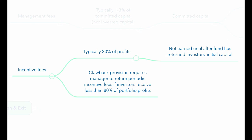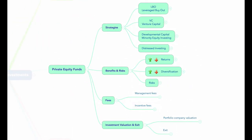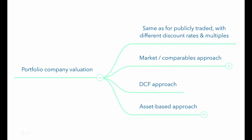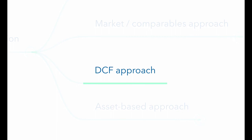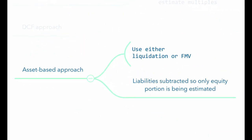Let's look at how private equity funds value portfolio companies as well as some of the exit strategies. Valuation methods for PE portfolio companies are essentially the same as for publicly traded companies, although discount rates or multiples may differ. These include the market or comparables approach, which uses transaction values of similar companies to estimate multiples; the discounted cash flow approach; and an asset-based approach using either liquidation values or fair market values of assets, with liabilities subtracted to estimate only the equity portion of the firm's value.